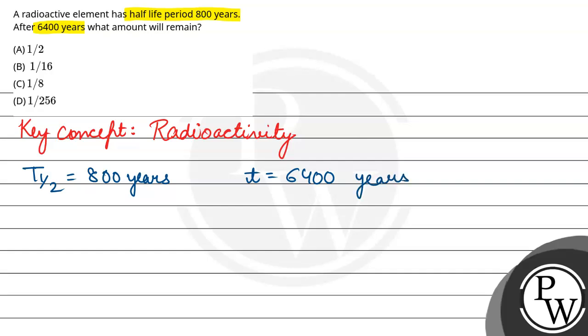So our formula is N by N0. N0 is the initial amount present, N is the final amount present, equals to 1 by 2 raised to the power t by t half.